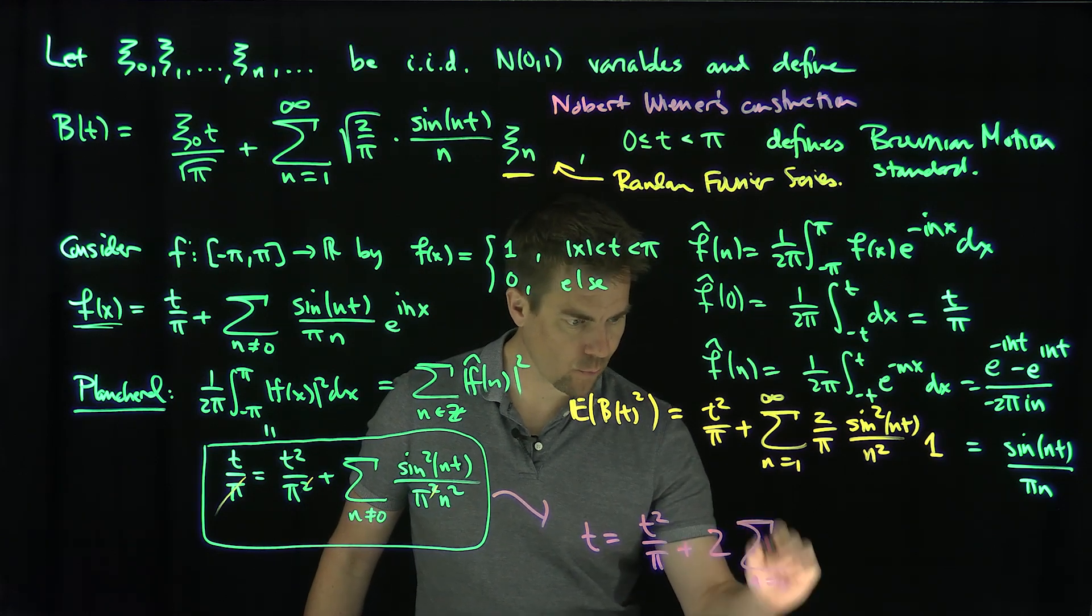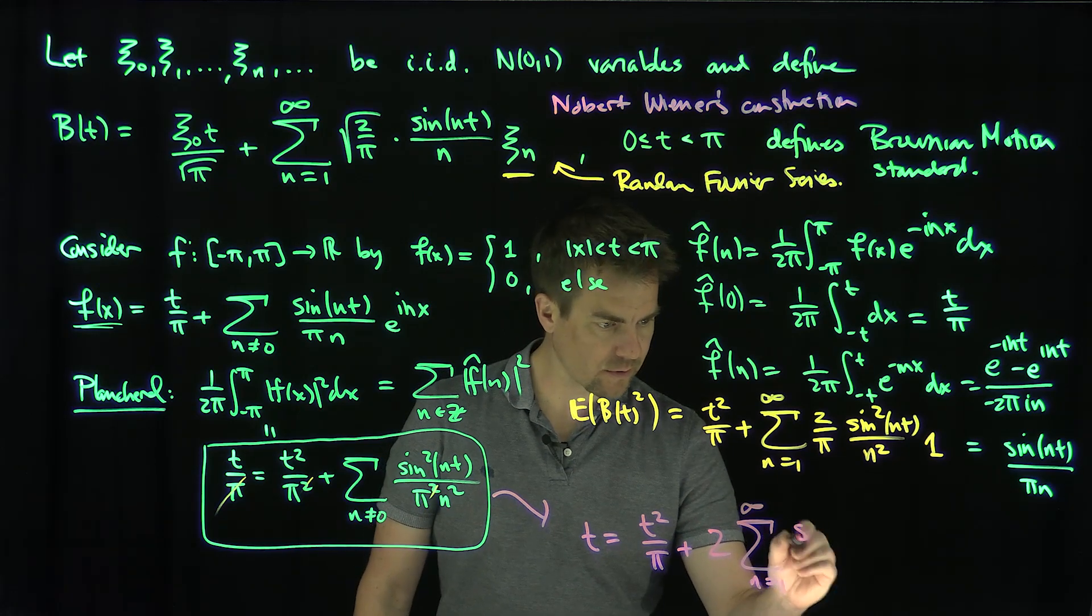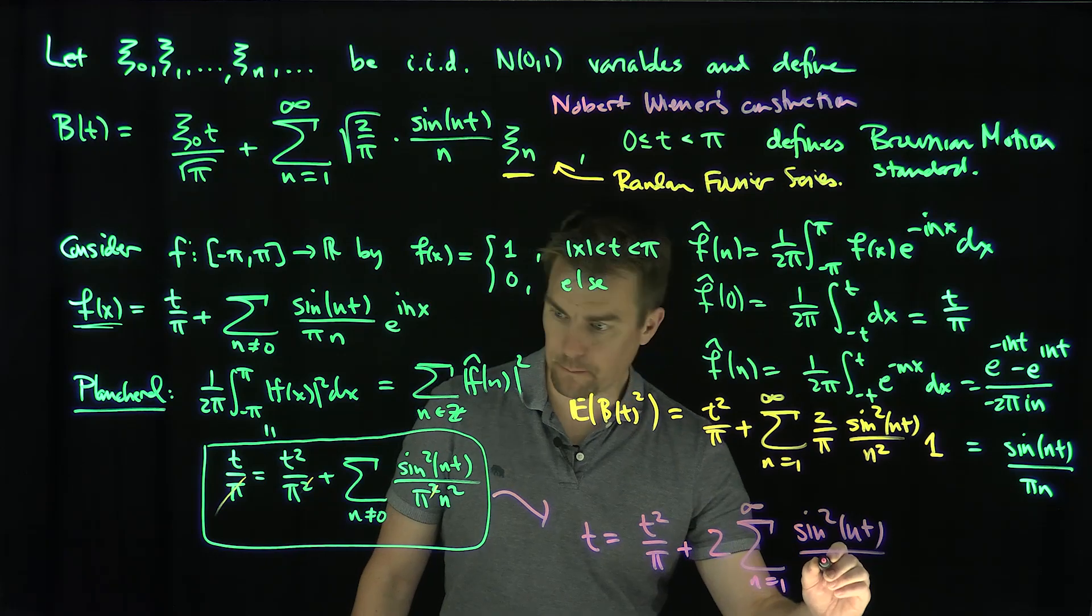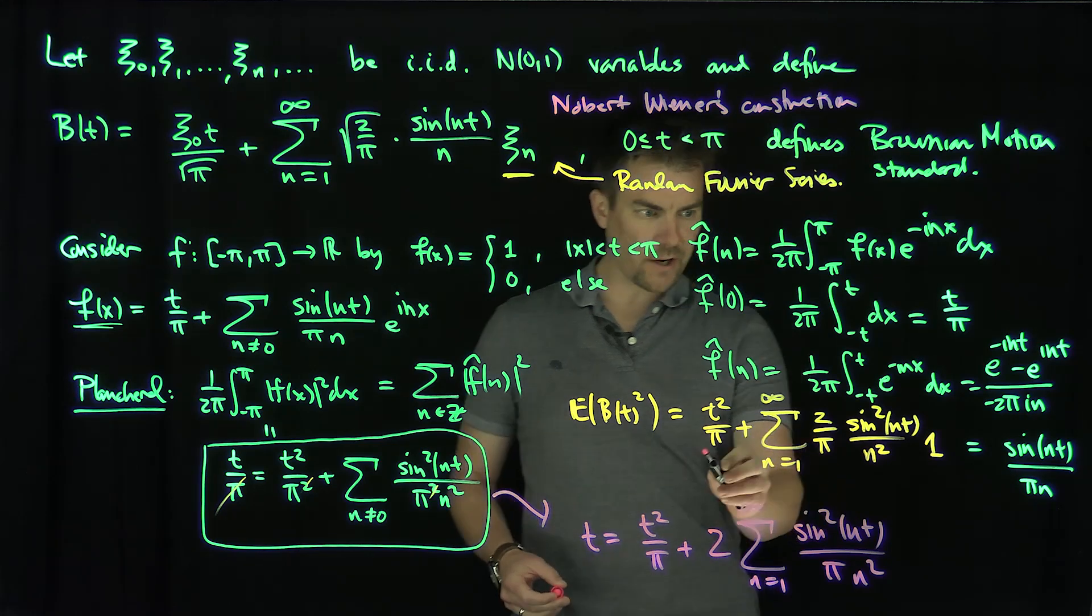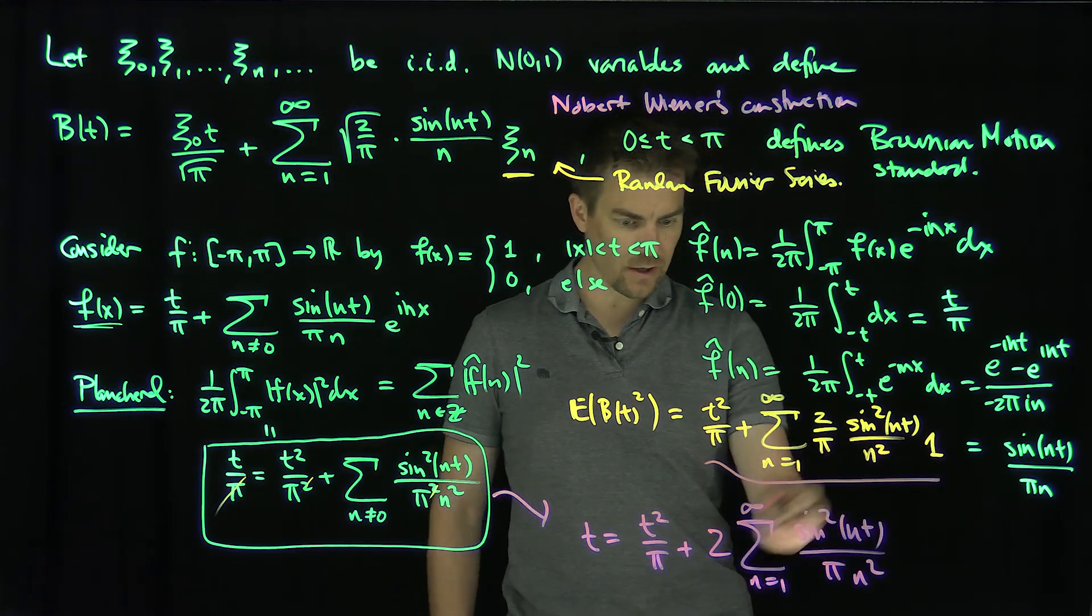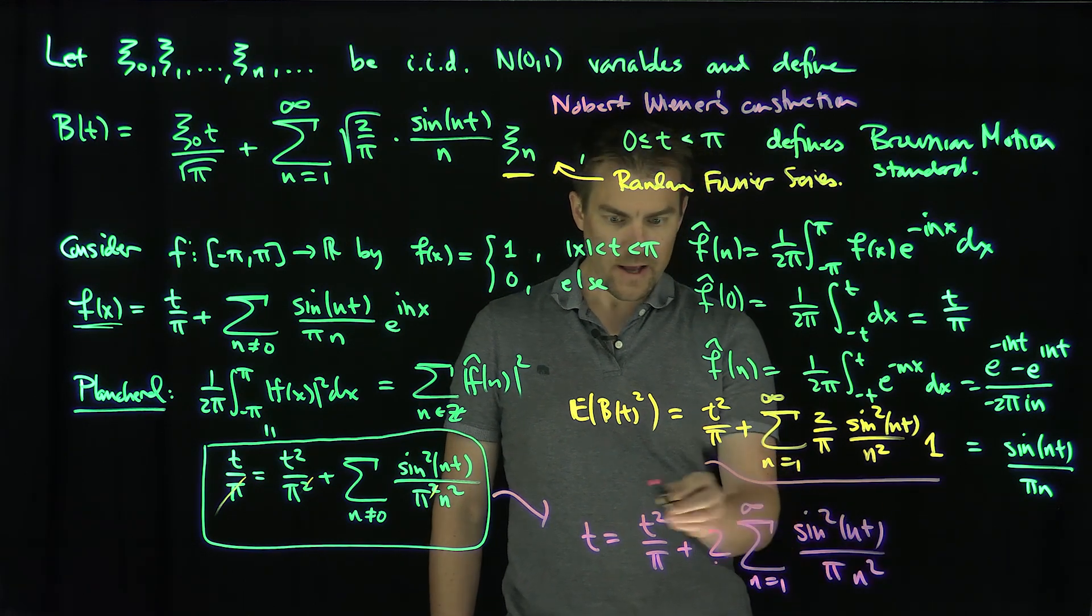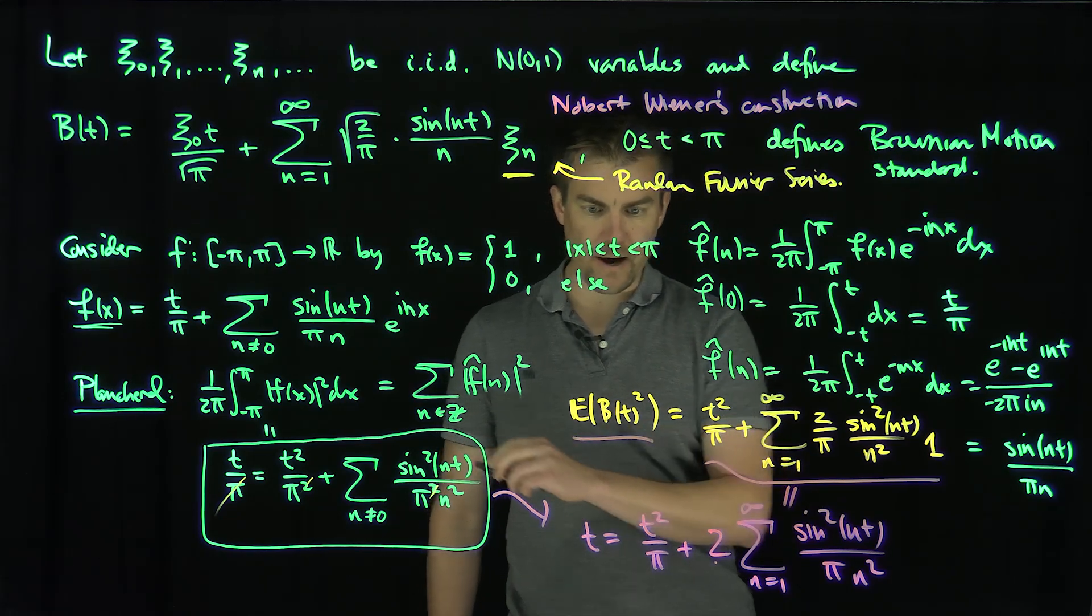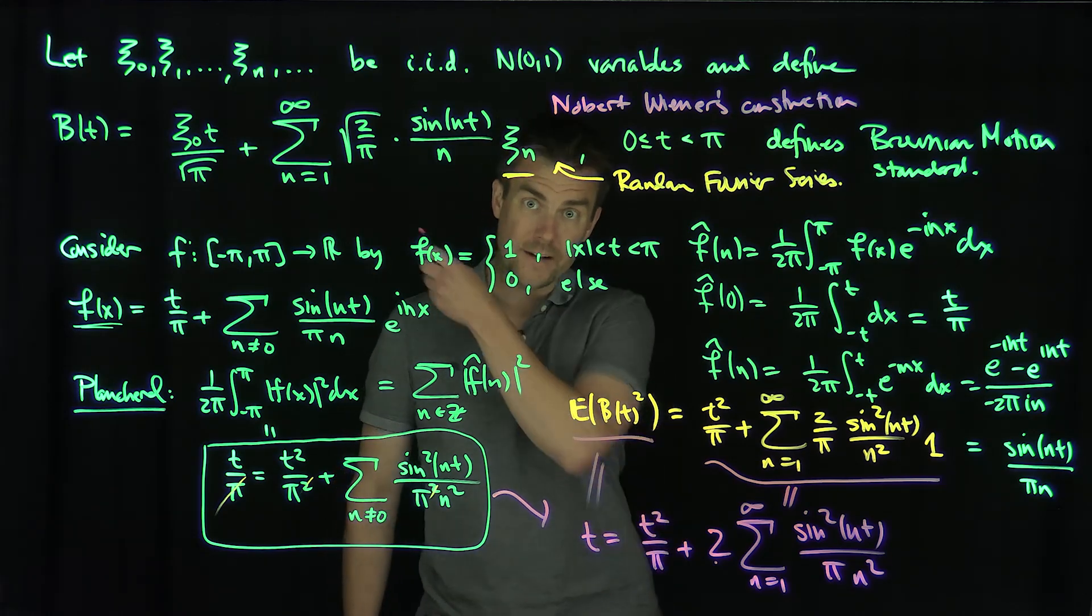And so lo and behold, look what we have over here. We have t² over π, and then the sum from one to infinity of 2 over π sin²(nt) over n², and so this expression over here and this expression are equal, therefore, the expected value of B(t)² is equal to t, so this thing has the right variance.